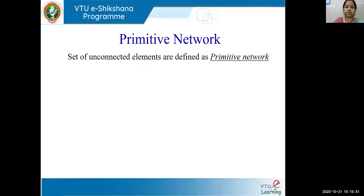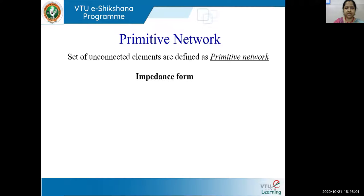So, primitive network. First, we have to understand what do we mean by primitive element. A primitive element is an element which has no connection with any other element in the network. A set of such unconnected elements is defined as a primitive network. It indicates you want to know the individual behavior of elements — these elements are not connected to each other. Because once you know the behavior of individual elements, then only when these elements are interconnected with each other, we can understand the complete behavior of the network.